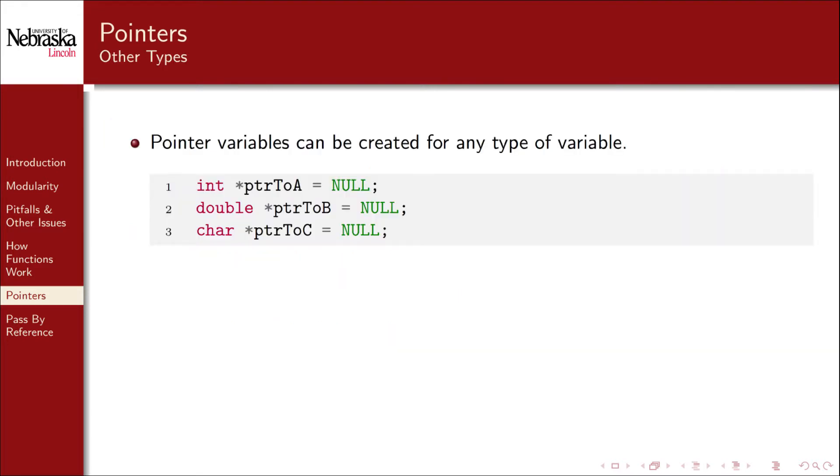Pointer variables can also be created for any type of variable. Here are a few more examples. You can also test a pointer variable to see if it's null. In fact this is a very common error handling operation called a null pointer check.